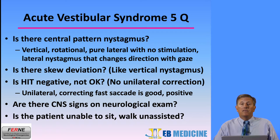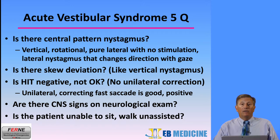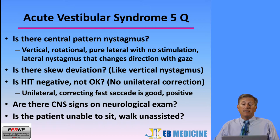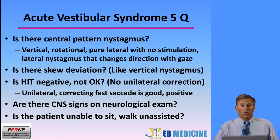All of these are not found. Is there skew deviation? You can say there is no vertical skew deviation. Is the HINTS test negative or not okay? You can say there is the presence of a unilateral correcting fast saccade on one side, which is good — positive — suggesting a peripheral labyrinthine etiology.